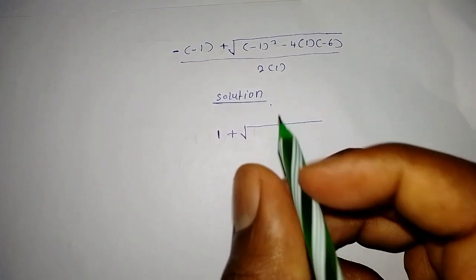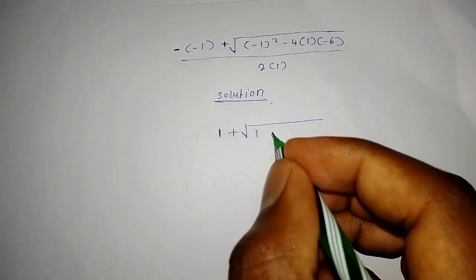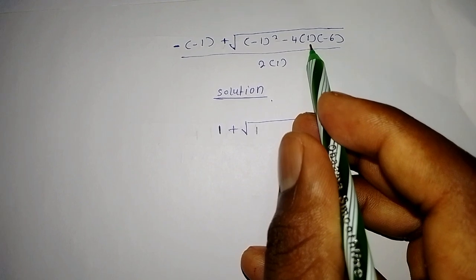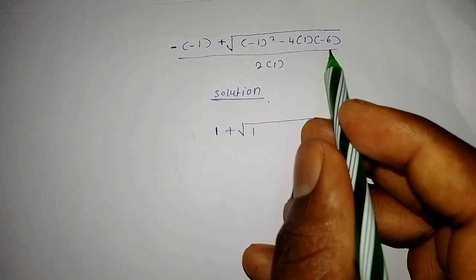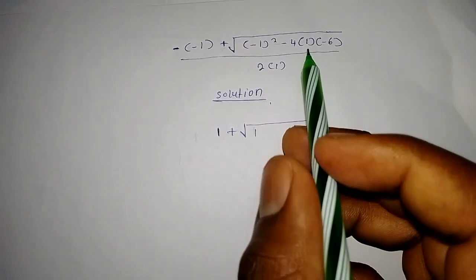That is negative 1 squared, you are going to get 1, then negative 4 multiply by 1, that's negative 4, multiply by negative 6, you are going to get 24 because a negative multiply by a negative will give us a positive, that becomes positive 24.